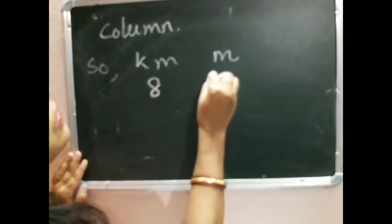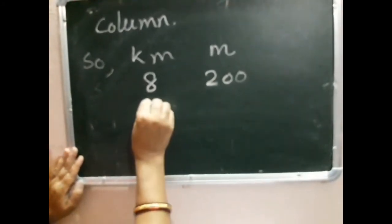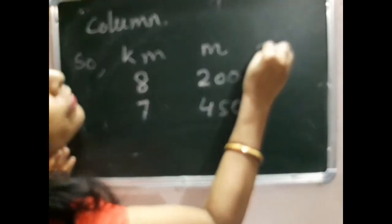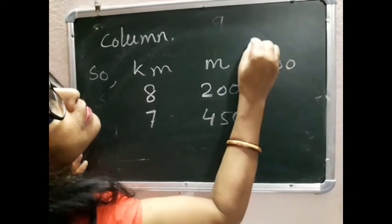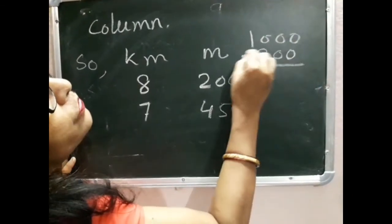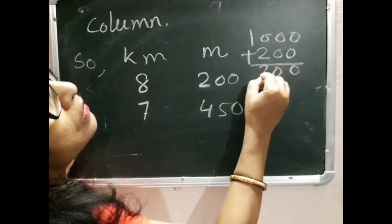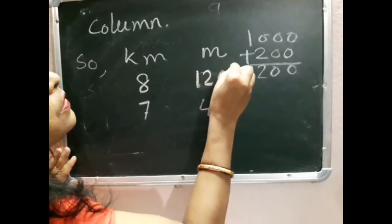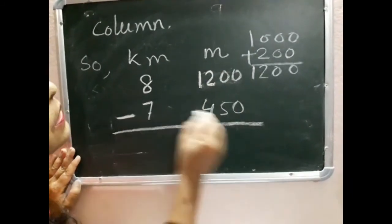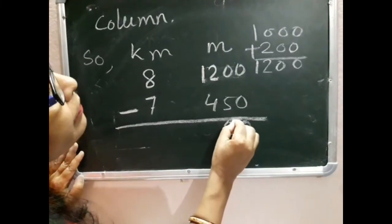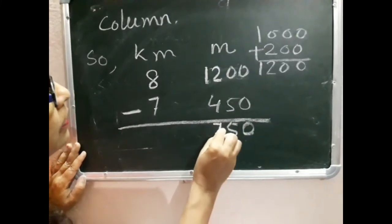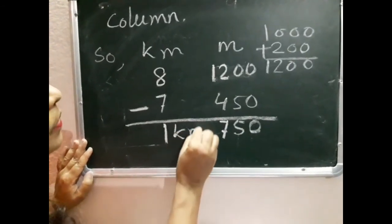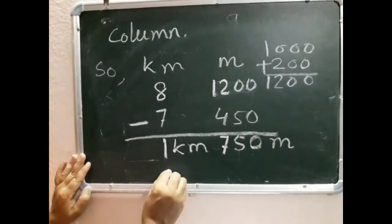8 kilometers in the kilometer column, 200 plus 1000 equals 1200 meters. 1200 minus 450 equals 750 meters, and 8 minus 7 equals 1 kilometer. This is the answer: 1 kilometer 750 meters.